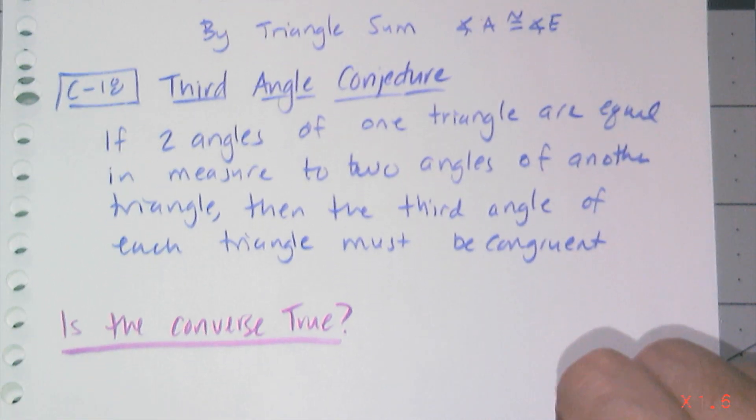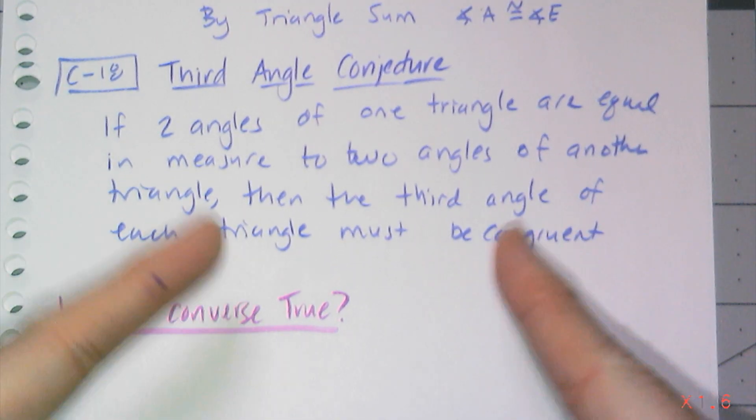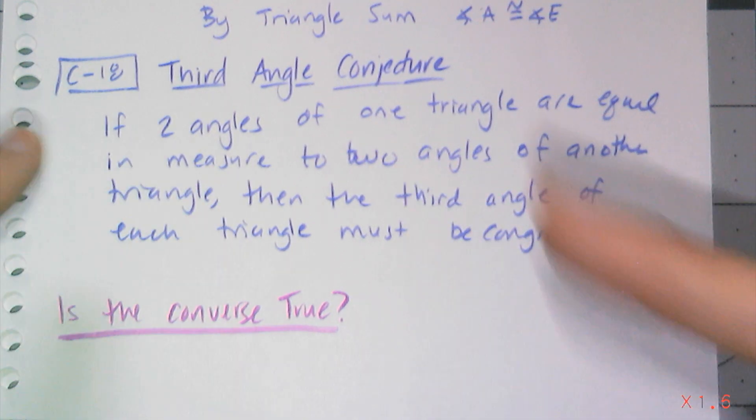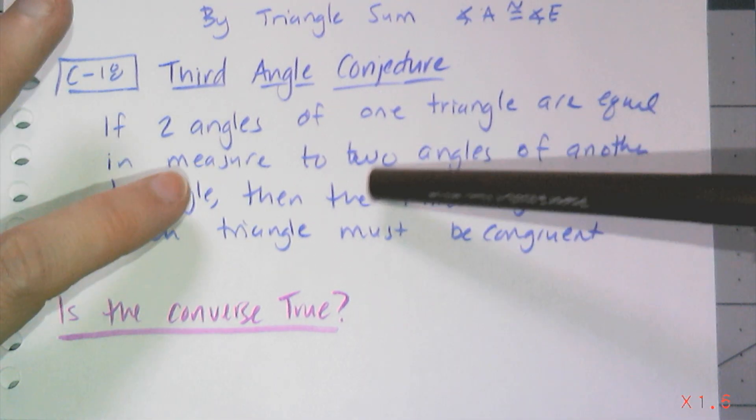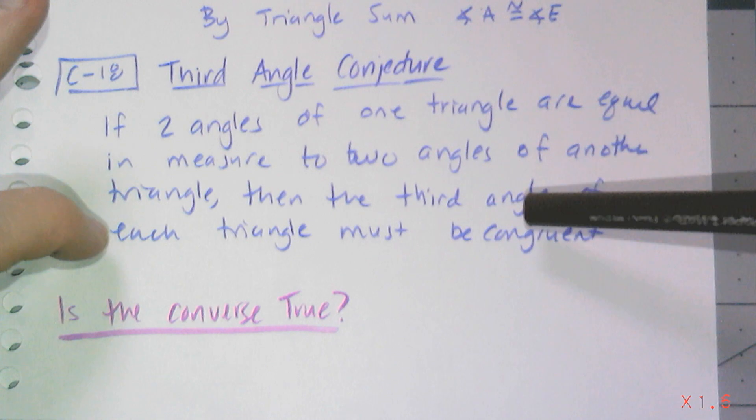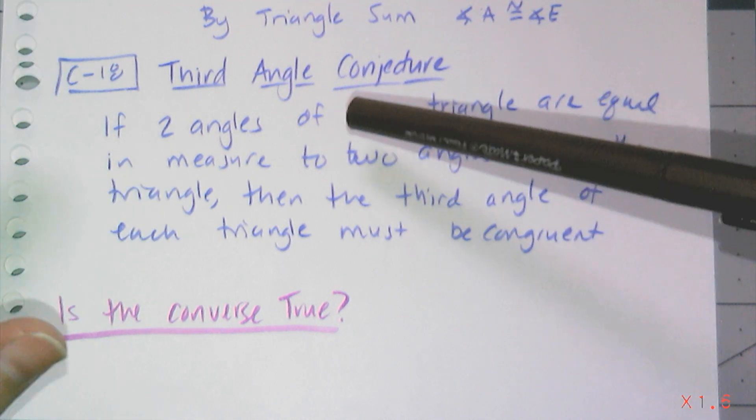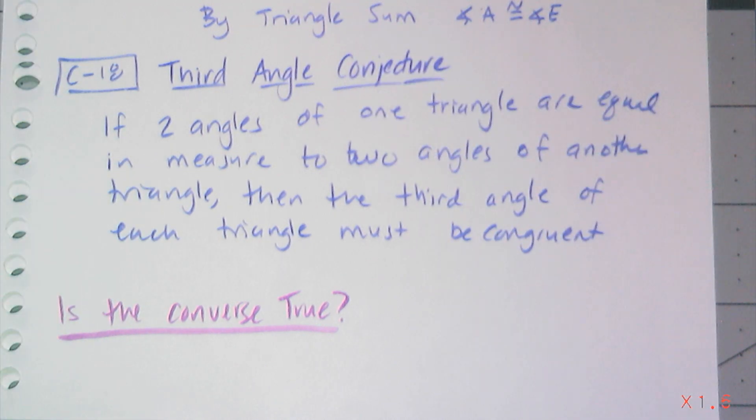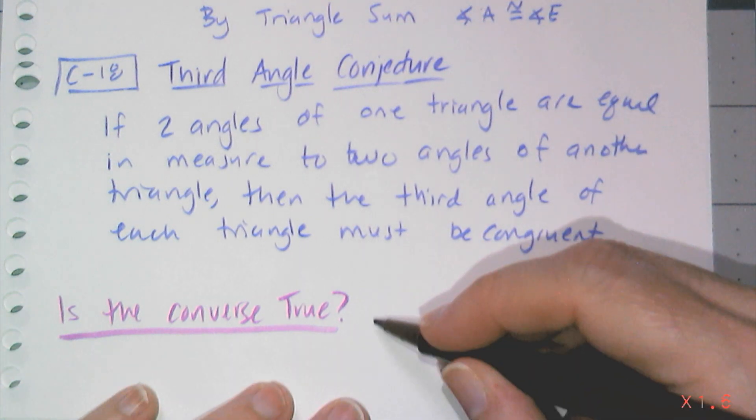And so the real question is, is the converse true? And remember the converse is when I switched the premise and the conclusion. And so the converse would be if I have an angle of each triangle that's congruent, does that mean that the other two angles have to be congruent? And the answer is no. The other two angles don't have to be congruent. Now the sum of the other two angles, that has to be congruent. But it doesn't tell me anything about the actual individual angle measures other than the one that was congruent. So the converse is true? No, it is not true.